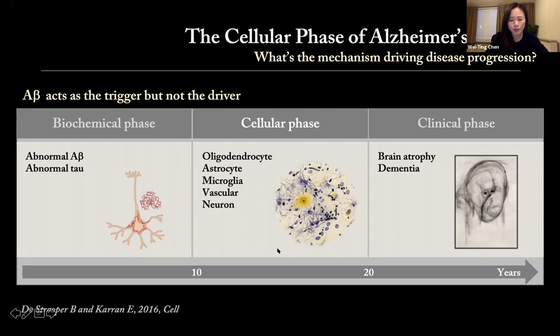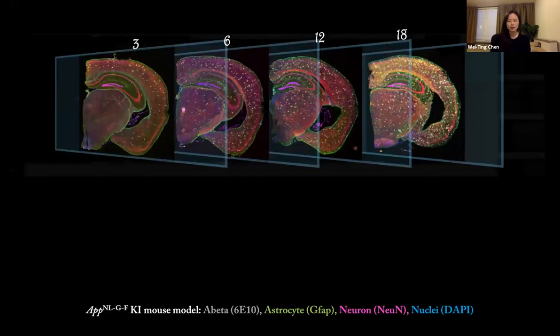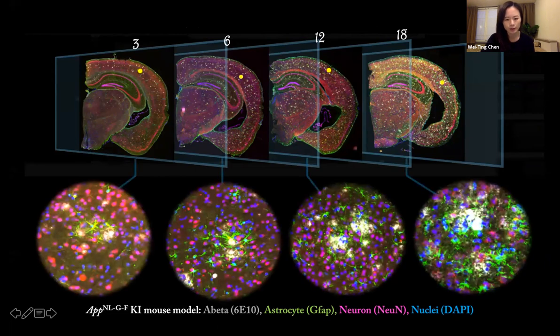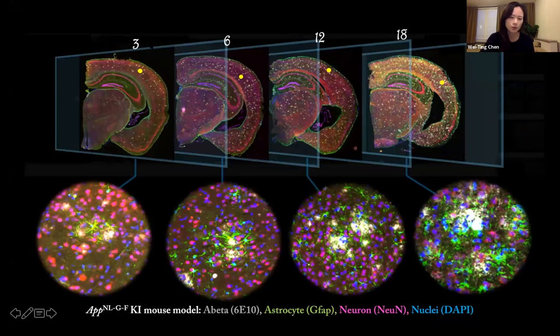We want to understand what's the molecules, what's the cell types involving this network. Initially we have immunohistochemistry, and we use the APPPS1 model, which is an APP-PSEN1 knock-in model. The coronal section of the mouse brain from three to eighteen months of age. You can see the green, that is GFAP, reactive astrocytes. They form a green envelope around the white, that is amyloid plaque, at the very initial stage of the disease. During disease progression, those networks are spreading over, depending on the presence of the plaque and propagating to outer brain regions.